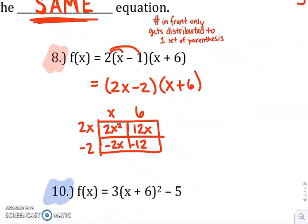And remember, f of x just means y. So our new equation will be f of x equals 2x squared, 12x plus negative 2x is 10x minus 12.